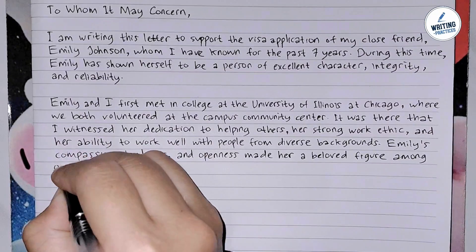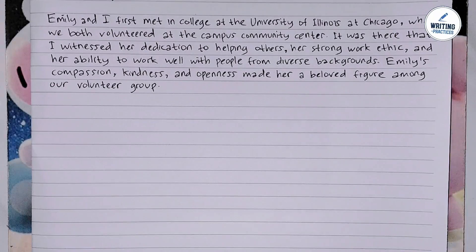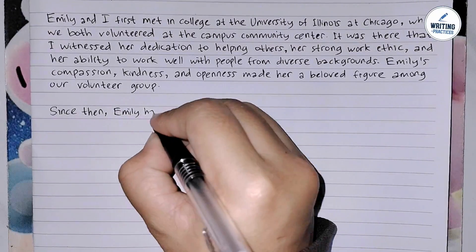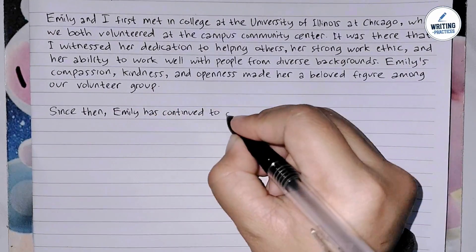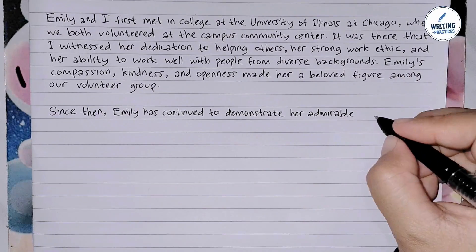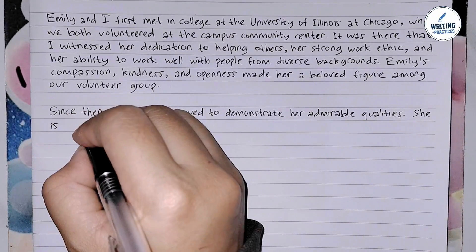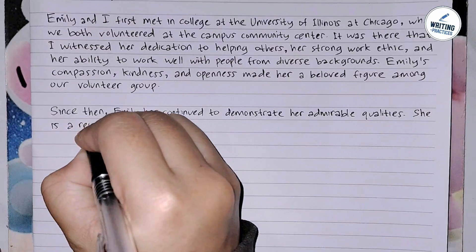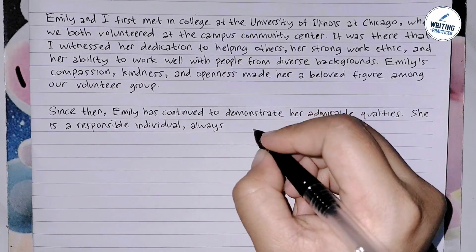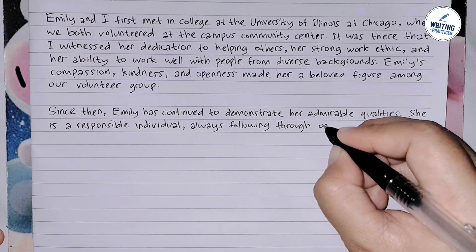In the third paragraph, you elaborate more about the applicant's character. You must elaborate on the applicant's character and personality traits that make them suited for the visa application. Focus on qualities like trustworthiness, responsibility, and cultural awareness. You can also discuss traits such as dedication, respect for others, and responsibility.